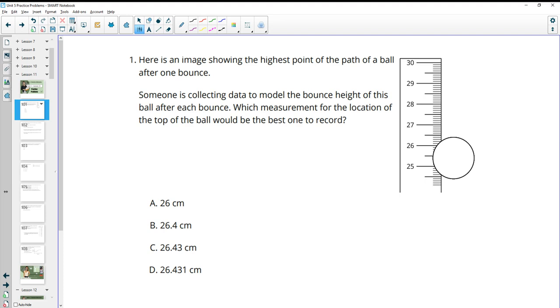Number one says, here's an image showing the highest point of the path of a ball after one bounce. Someone is collecting data to model the bounce height of this ball after each bounce. Which measurement for the location of the top of the ball would be the best one to record?